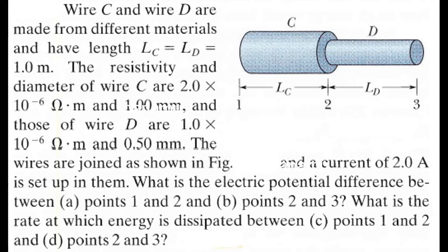Wire C and wire D are made from different materials and have length LC equal to LD equal to 1 m. The resistivity and diameter of wire C are 2×10⁻⁶ Ω·m and 1 mm. Those of wire D are 1×10⁻⁶ Ω·m and 0.5 mm. The wires are joined and a current of 2 A is set up in them. Find the electric potential difference between points 1 and 2, and points 2 and 3. Also find the rate at which energy is dissipated between those points.